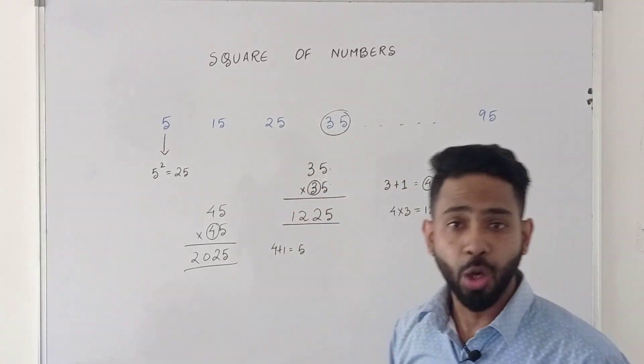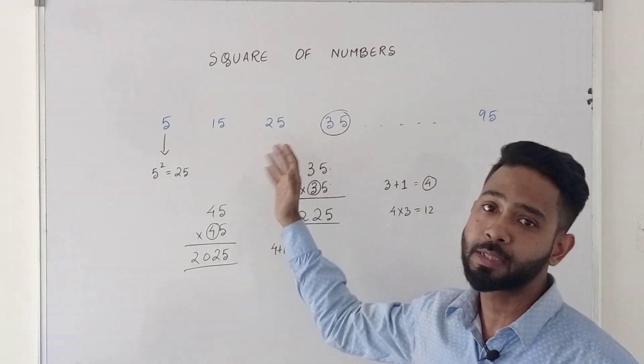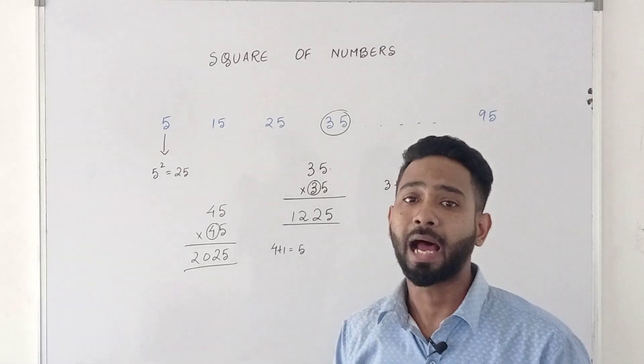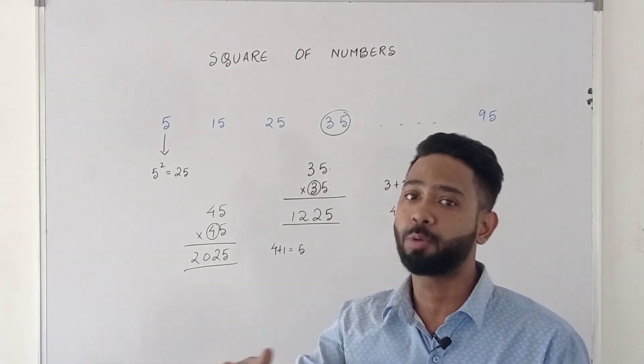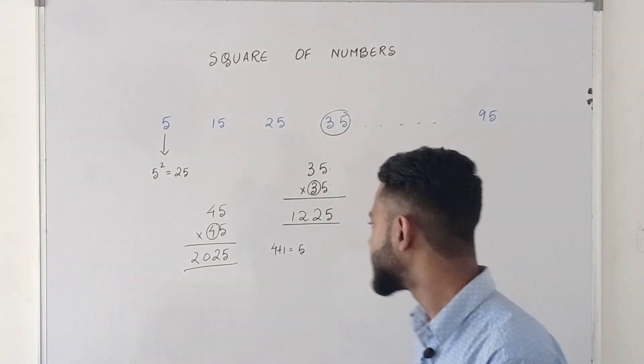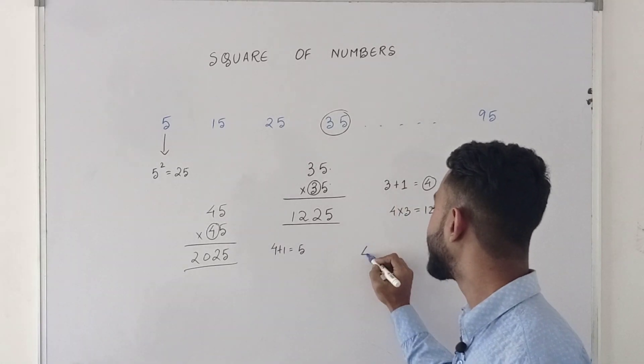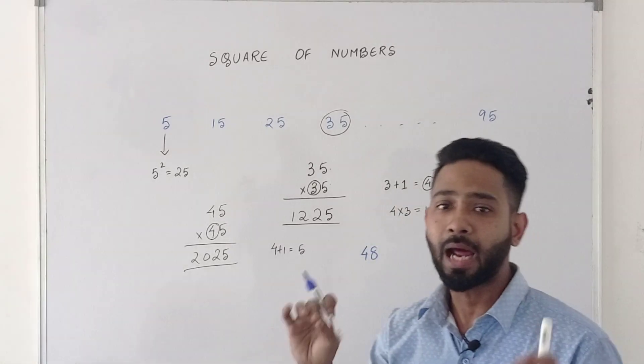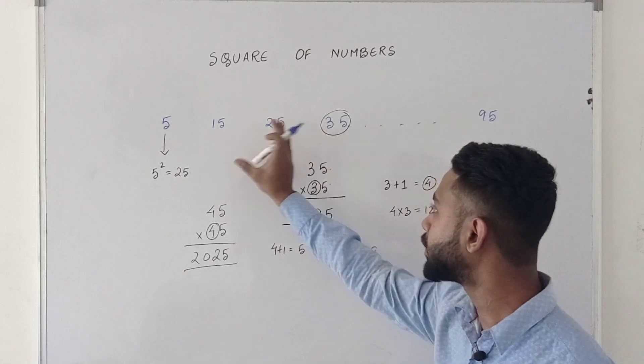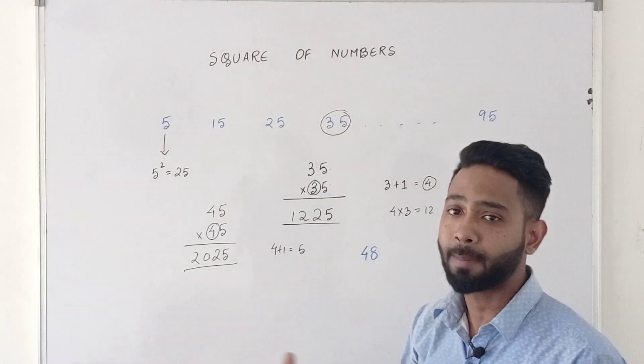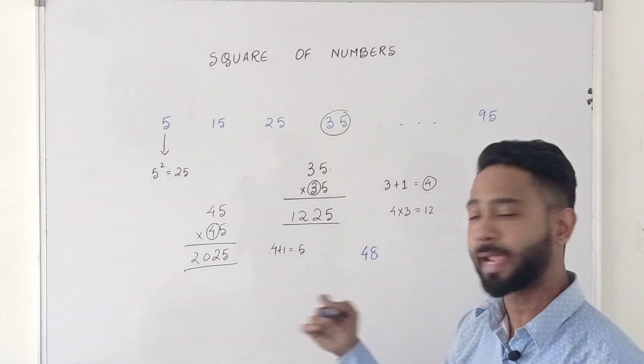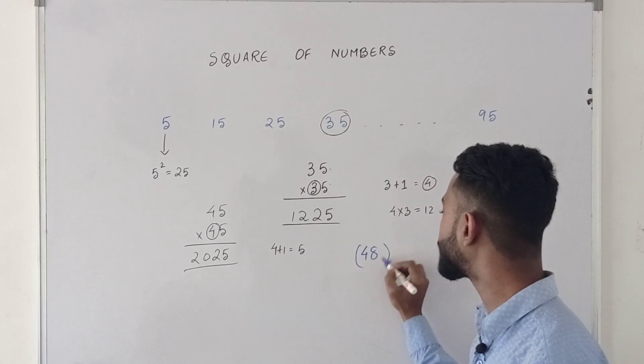Now you may ask, what about 5 or multiple? I am choosing 5. This is 5 or multiple. But what if I want to find the square of some other number, like if I want to find 48 square? There is another easy trick. But I am using 5 multiples because it's easy to apply.